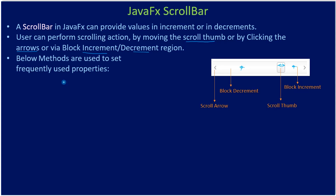Below are the frequently used methods that set important properties on the scroll bar. One is setMin — for example, if you set zero, when the scroll thumb is towards the leftmost edge it will produce the value zero. Then setMax tells what value is produced when the scroll thumb is at the rightmost edge. For example, if you set 100, the scrolling will produce a range of values between zero and 100 depending on the scroll thumb position.